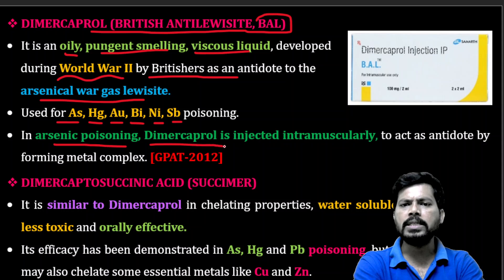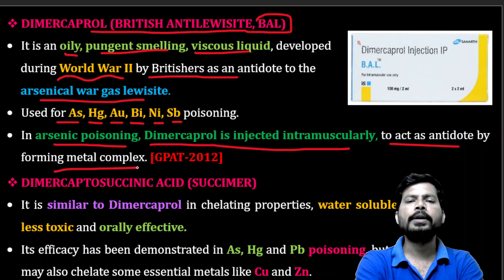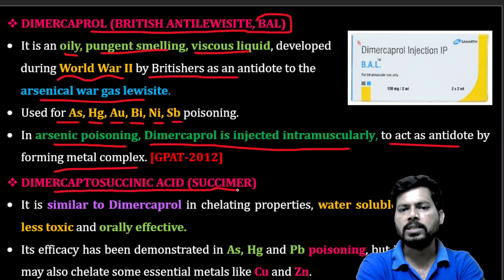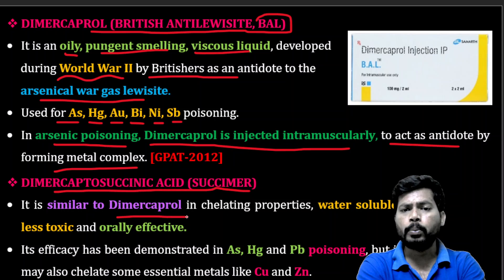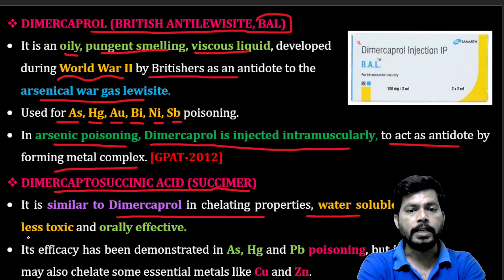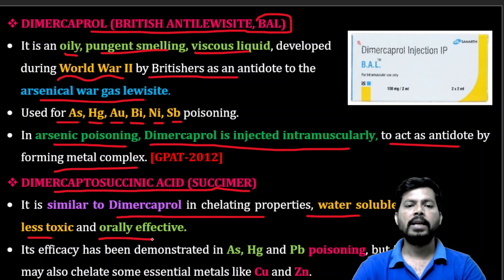In arsenic poisoning, dimercaprol is injected intramuscularly to act as an antidote by forming a metal complex. Succimer (dimercaprol succinic acid) is similar to dimercaprol in chelating properties but is water-soluble, less toxic, and orally effective.